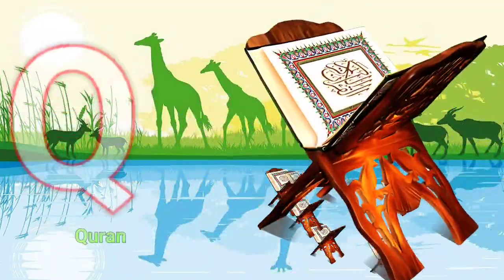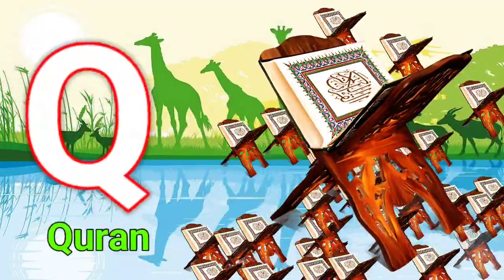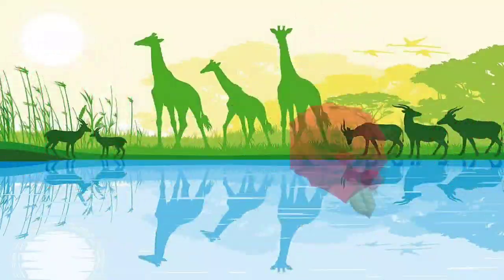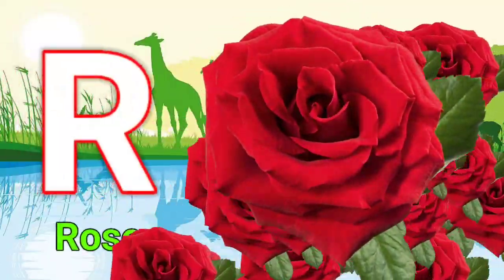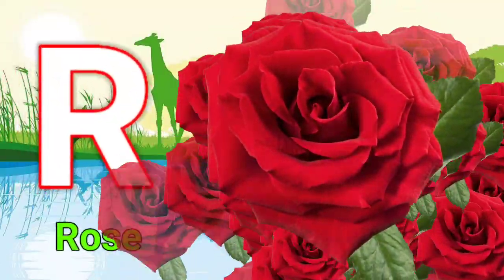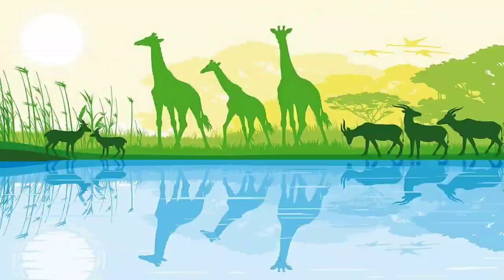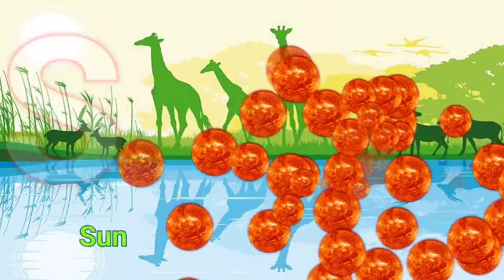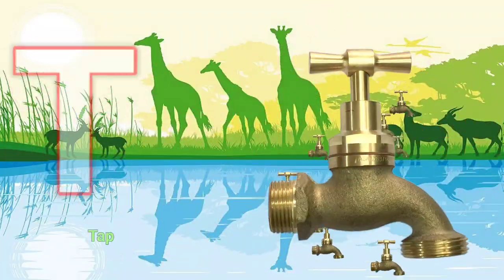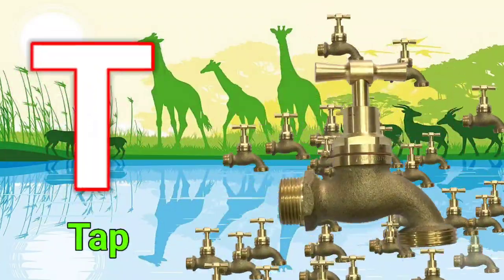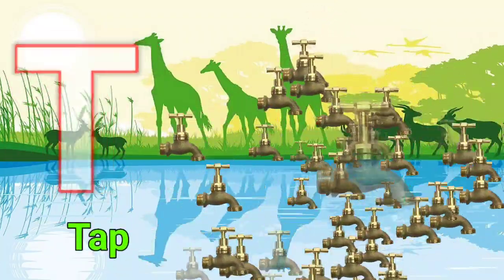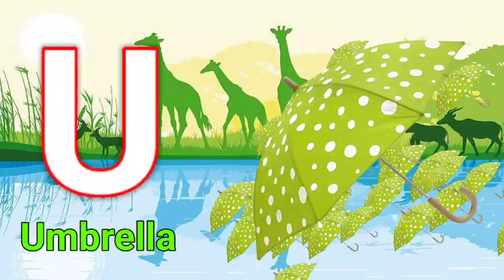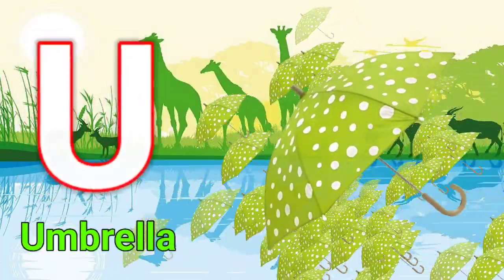Q for queen, R for rose, S for sun, T for tap, U for umbrella.